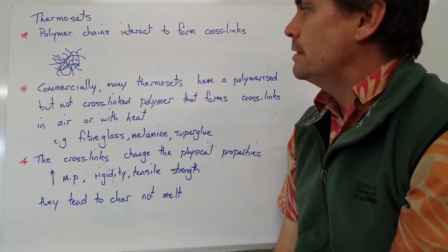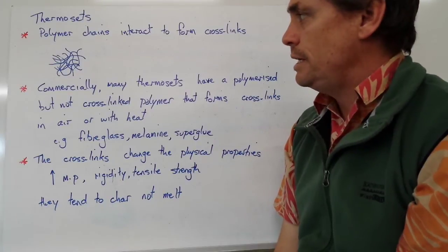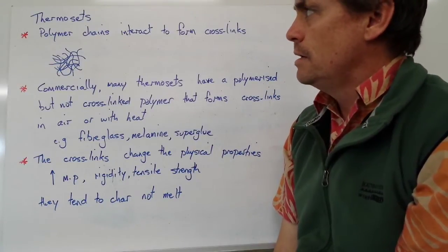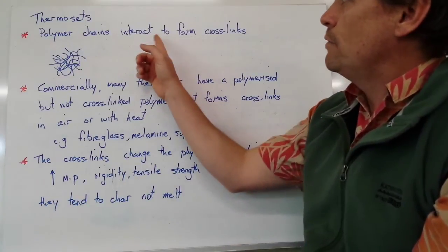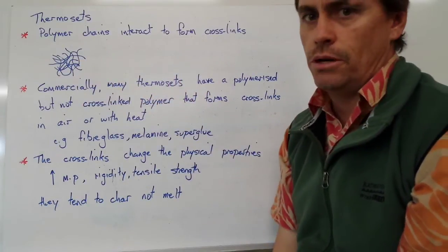Quite often we find that cross-linking could be hydrogen bonding or dipole-dipole bonding. But the important distinction between thermoplastics and thermosets is that we've got much more interaction between the polymer chains.